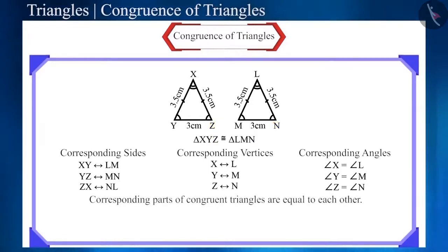Friends, from this we can conclude that the corresponding parts of congruent triangles are equal to each other. We abbreviate it as CPCT, that is, corresponding parts of congruent triangles.